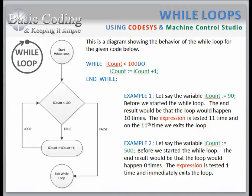For our first example, let's say iCount equals the value of 90 before we started the while loop. The end result would be that the while loop would functionally loop through 10 times before exiting.